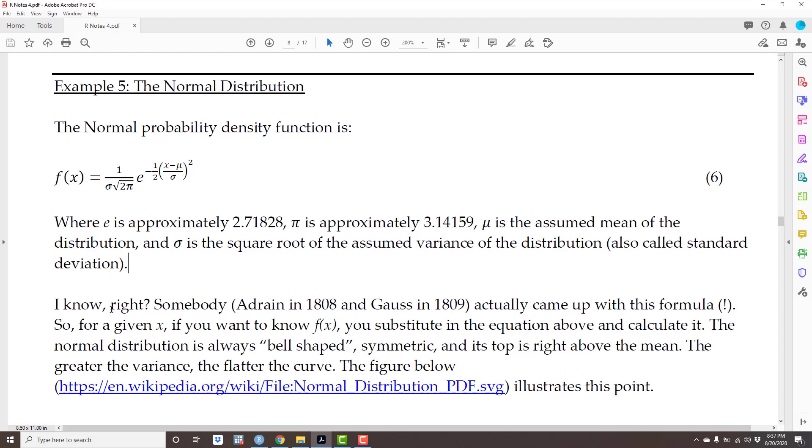I know, right? Somebody came up with that. Basically, Gauss, that's also called the Gaussian distribution. So for a given x, if you want to know f of x, you have to substitute in this equation here. The normal distribution is always bell-shaped and symmetric.